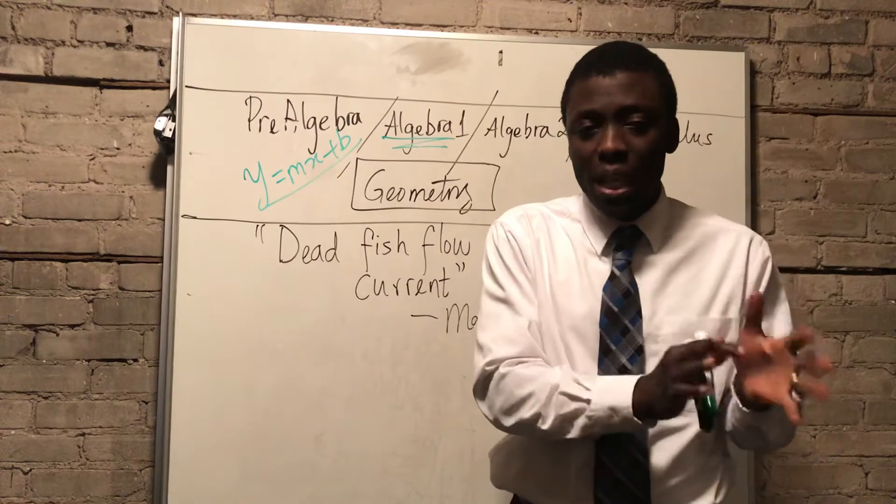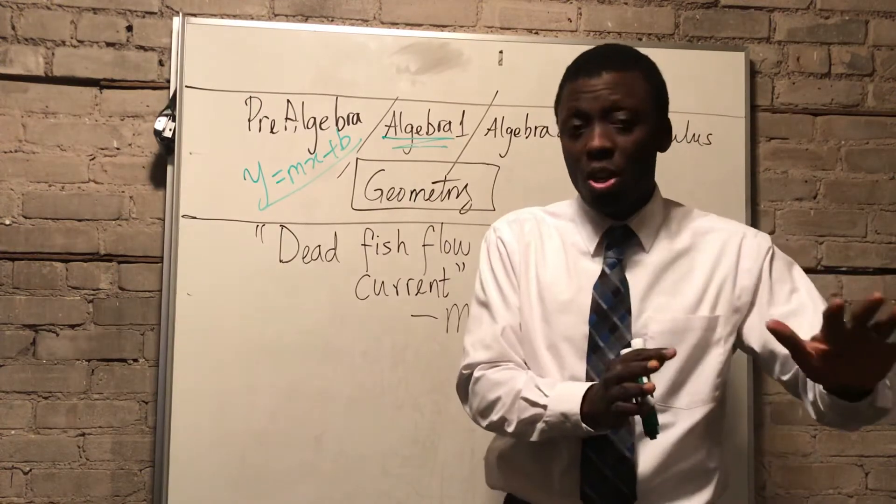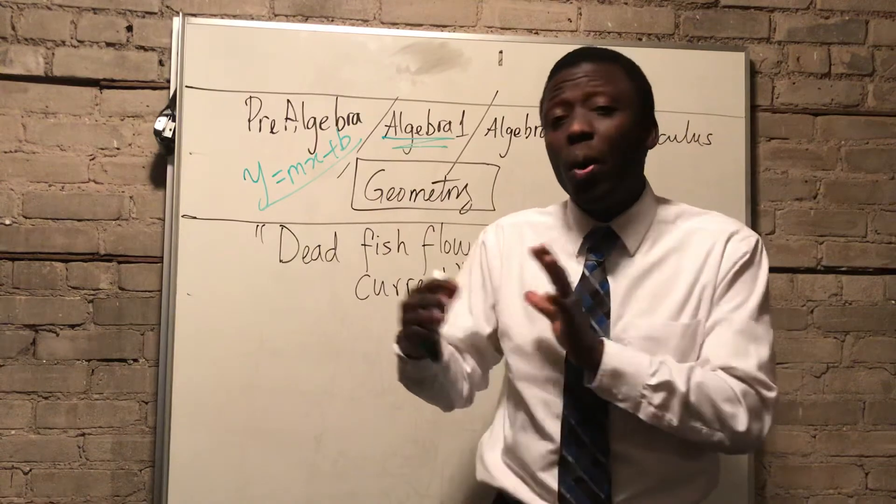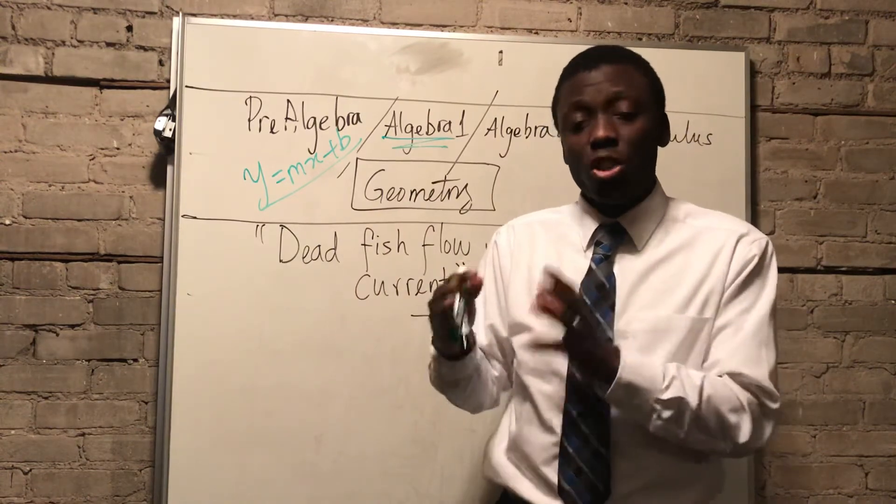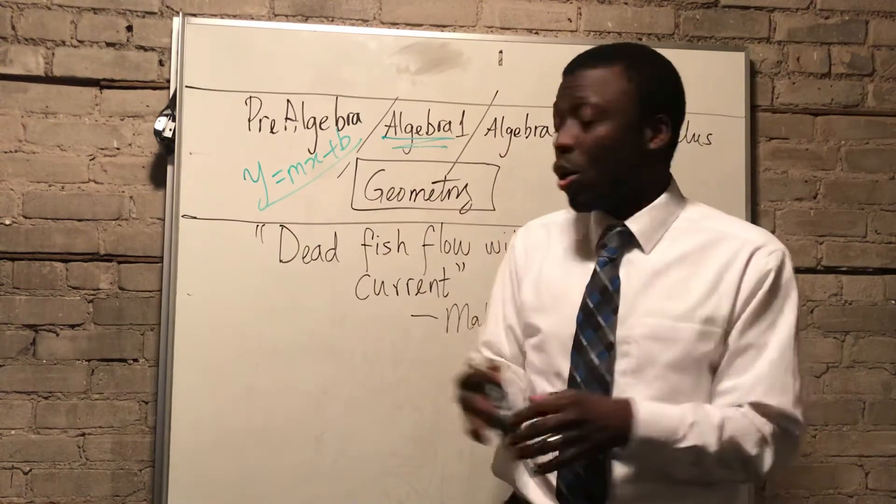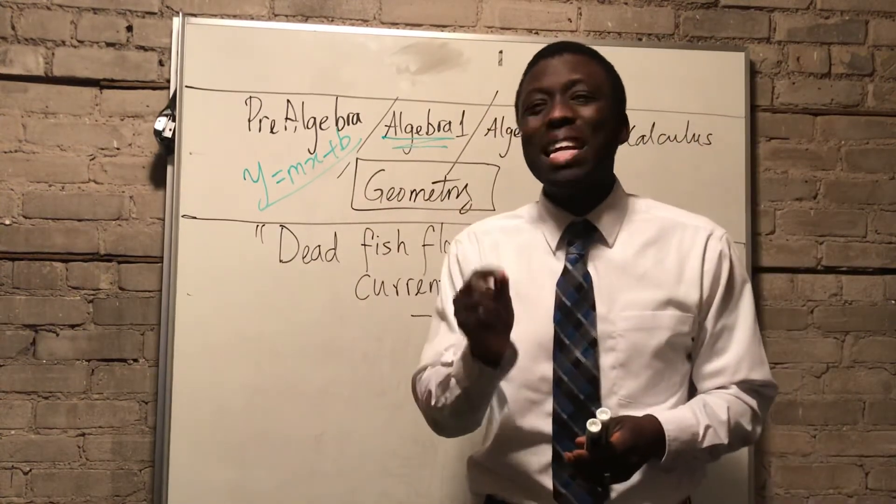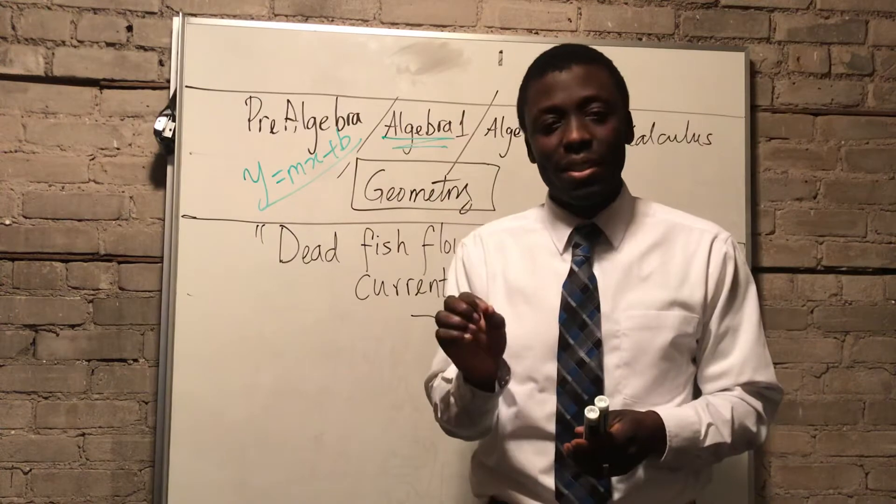So use Algebra 1 and 2 with an open source textbook, cover all the concepts you need to cover, cover everything. Then you take pre-calc, you cover the whole book of Larson. And then you take geometry, you cover the whole content, the whole book as well.